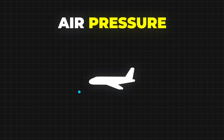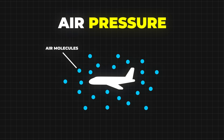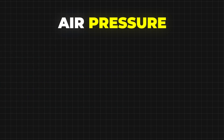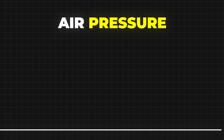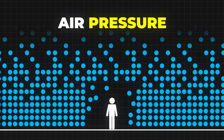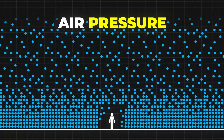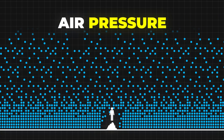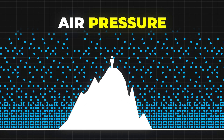In the realm of aviation, air pressure plays a fundamental role. It's the force exerted by air molecules on any surface they come into contact with. Imagine yourself standing at sea level, where the air pressure is at its highest. As you ascend to higher altitudes, such as atop a mountain, the air pressure decreases.